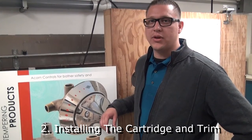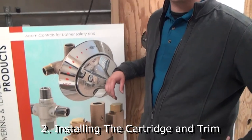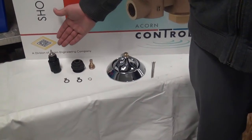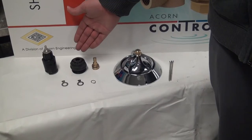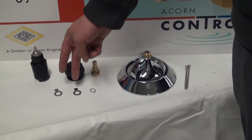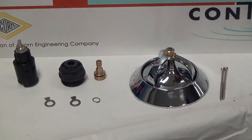Here's an overview of the Acorn Controls RSV-16 components that you'll be installing. Those components consist of a cartridge, a bonnet cap, a valve stem, two limit stops, a snap ring, and your trim package.